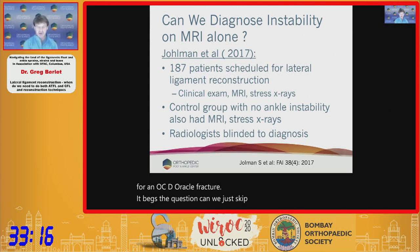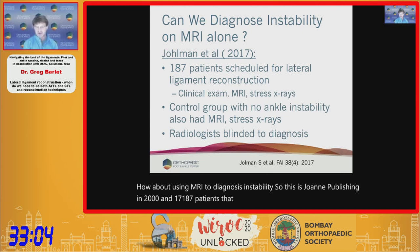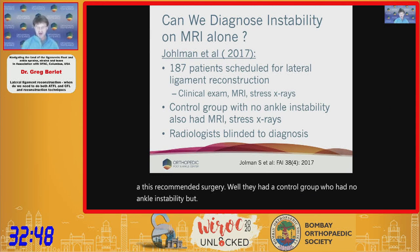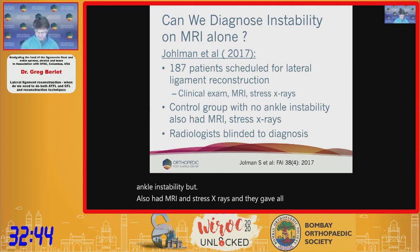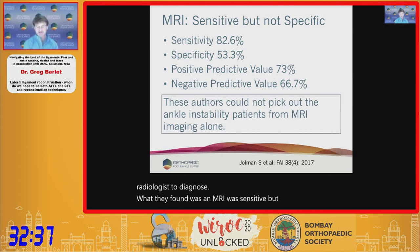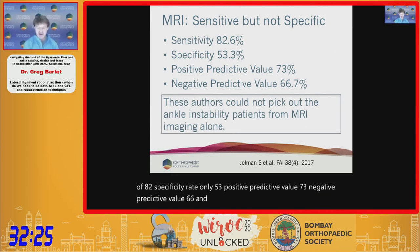Can we skip the physician and go straight to imaging? Joelman published in 2017 on 187 patients already scheduled for lateral ligament reconstruction — meaning a surgeon had identified chronic instability and recommended surgery. With a control group and blinded radiologists reading MRI and stress x-rays, MRI showed sensitivity of 82%, specificity of only 53%, PPV 73%, NPV 66%. The radiologists could not reliably identify ankle instability patients from MRI alone.